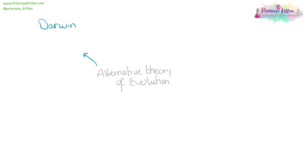When Darwin proposed his theory of evolution, it was very controversial. There were lots of religious objections. This is because he was saying that the Earth was billions of years old, whereas that's not what it says in the Bible. And he was saying that we evolved from monkeys, that we evolved from primordial soup — and that's not what it says in the Bible.